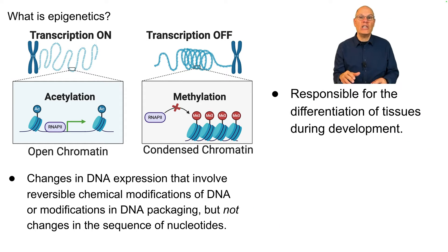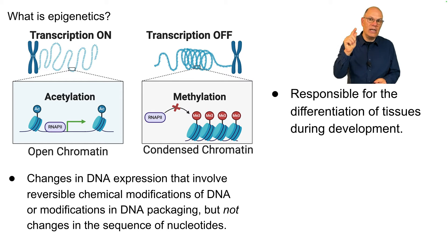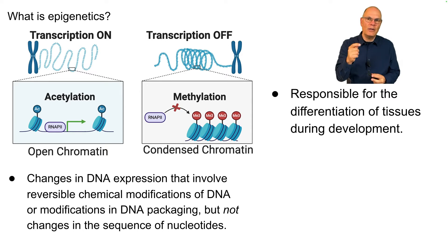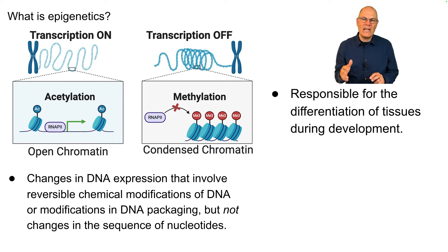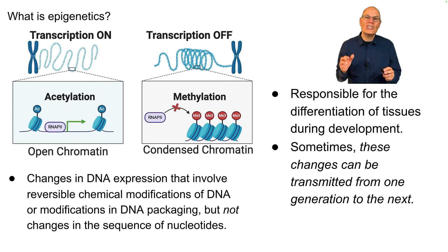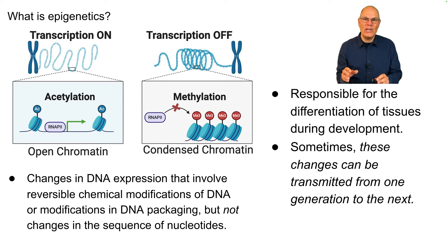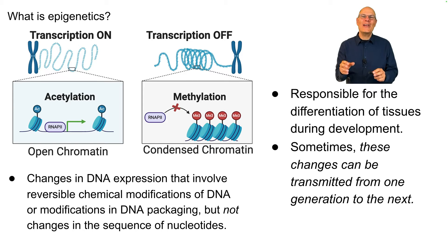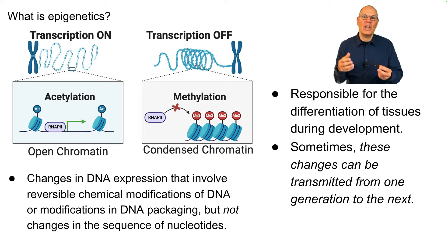Epigenetics is responsible for the differentiation of tissues during development. Why are skin cells expressing skin proteins, fingernail cells expressing fingernail proteins, and muscle cells expressing muscle proteins? Those are all about epigenetics, because all of those cells contain the same genes. Somewhat astonishingly, sometimes these changes can be transmitted from one generation to the next — that's the intergenerational transmission of epigenetic modifications of the genome.